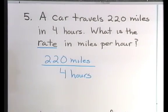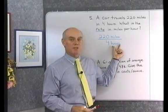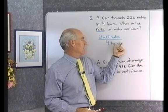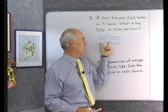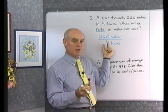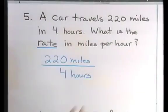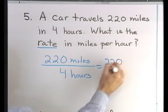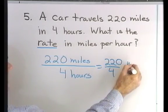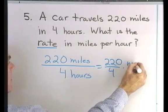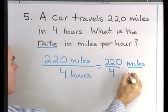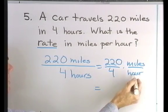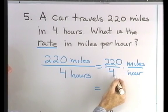Now I can take these units and treat them the same as I would fractions. I can put miles over hours and treat that separately from the 220 over 4. So this will be 220 over 4 times miles per hour — that way I've got my units separate from my numbers.